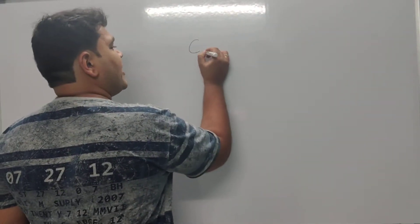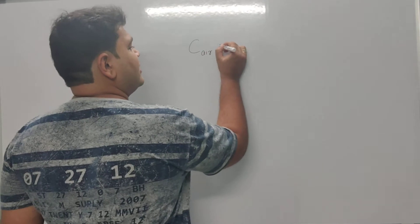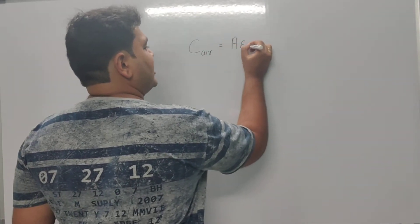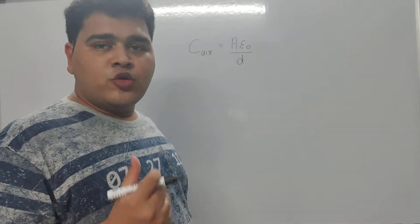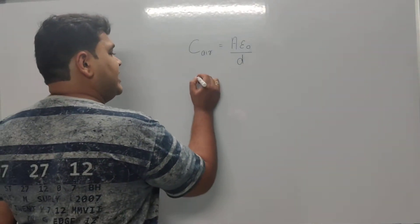We know that the capacitance in case of air is given by the formula C = A epsilon naught / d, where A is the area of the plate and d is the distance between the two plates.